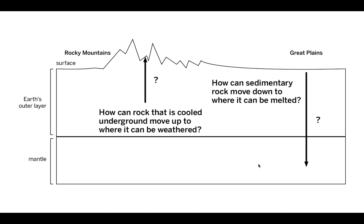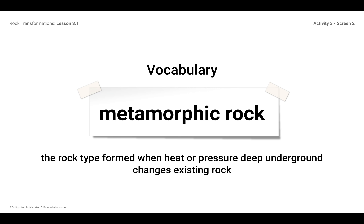We've got an article that we're going to read and annotate today called The Oldest Rock Formations on Earth. Before we do that, I want to let you know that we're going to be talking about metamorphic rock. This is a different kind of rock. Metamorphic rock is a type of rock formed when heat or pressure deep underground changes existing rock. So sedimentary rock and igneous rock can turn into metamorphic rock when exposed to heat or pressure underground.